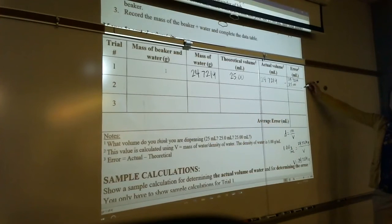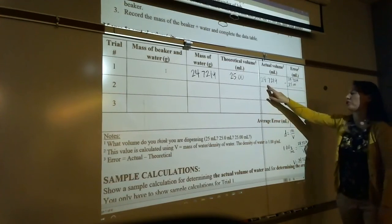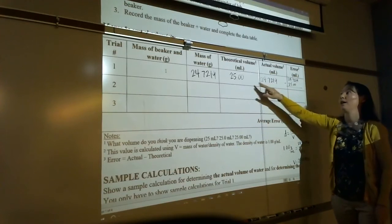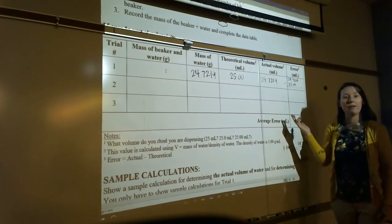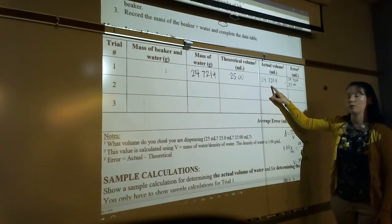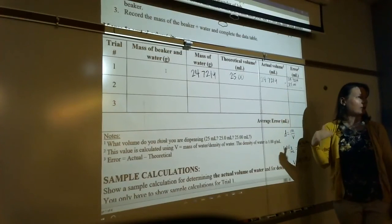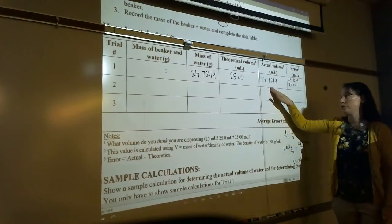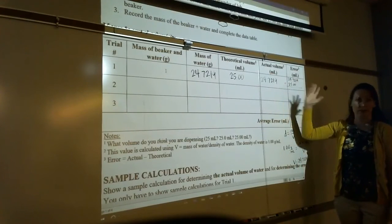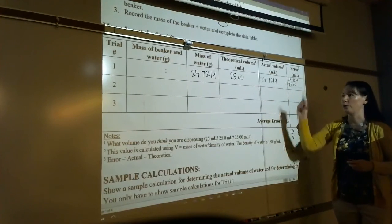Now if your error comes out negative, is that a problem? It's okay to have a negative error, because think about why. You actually dispensed less than what you were thinking you dispensed. Right? So if your error comes out negative, it just means that your actual volume was too low. You thought you were dispensing 25.00. You actually were dispensing 24.7219, et cetera. Right? So you're going to do that for three trials.